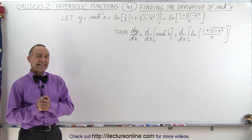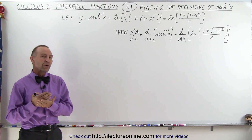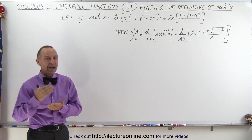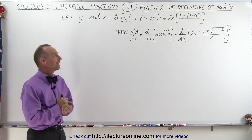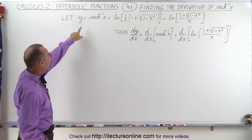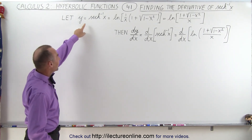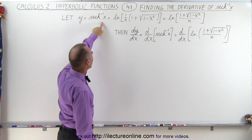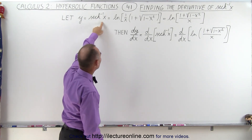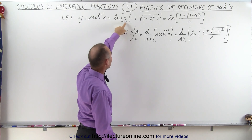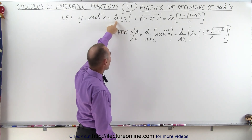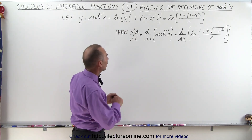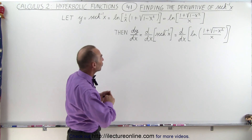Welcome to Y Lecture Online. In this video we're going to find the derivative of the inverse hyperbolic secant of x. Starting with y being equal to the inverse hyperbolic secant of x, we can express it in terms of x as the natural log of 1 over x times the quantity 1 plus the square root of 1 minus x squared.